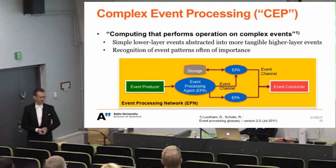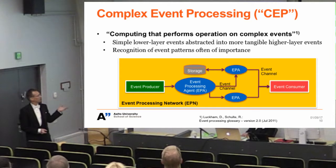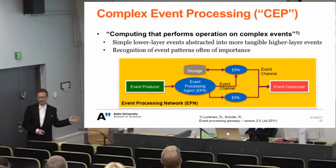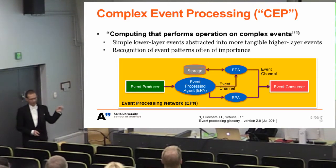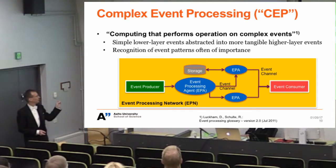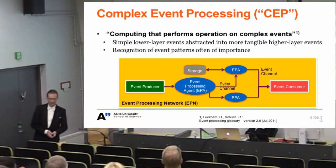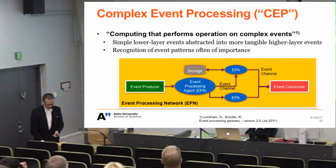Complex event processing — in the event processing glossary — is defined as computing that performs operations on complex events. That is not a very useful definition, but what it really means is that simple, lower-layer events are abstracted into more tangible, higher-layer events in a system where event processing agents process events in succession, trying to find higher-layer information out of them.